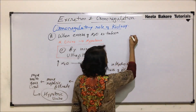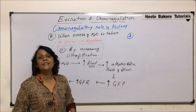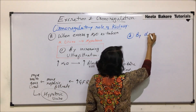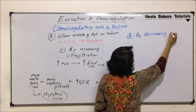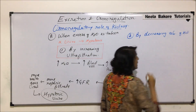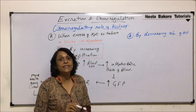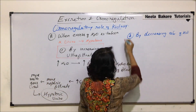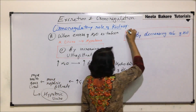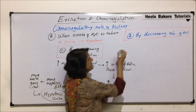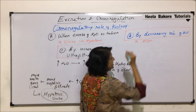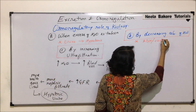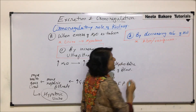The second method is by decreasing reabsorption of water. Absorption of water takes place in the DCT and collecting ducts, which are under the influence of ADH — anti-diuretic hormone, also known as vasopressin.